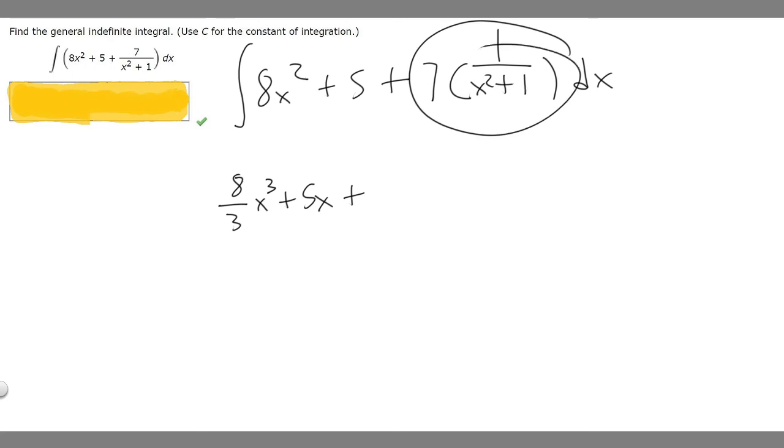Then we have 1 over x squared plus 1, and we've got to find the antiderivative of that. The thing you should realize is the derivative of the arctangent of x is equal to 1 over x squared plus 1. So if the derivative of arctangent of x equals 1 over x squared plus 1, then the antiderivative of this is arctangent. The antiderivative is 7 arctangent of x.